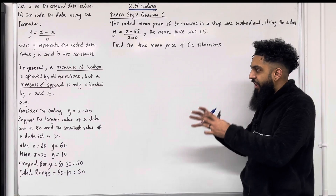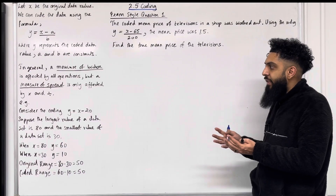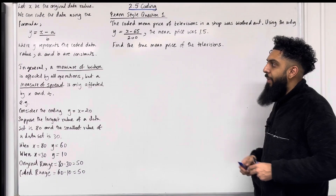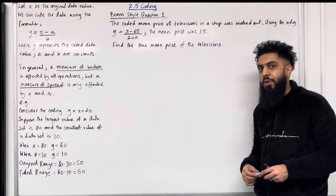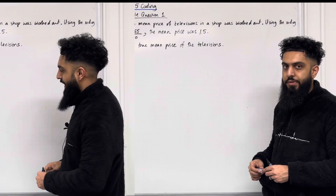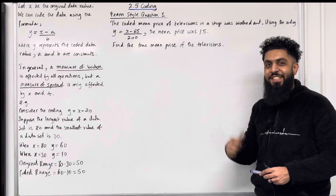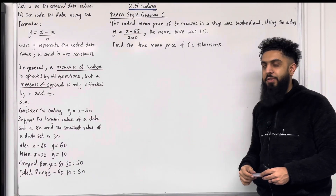The original range is 80 minus 30, which is 50. The coded range is 60 minus 10, which is also 50. So the original range and the coded range are the same — the range is not affected by the minus 20. These are the key facts. I'm going to be implementing these key facts in exam style questions. Here is exam style question 1.